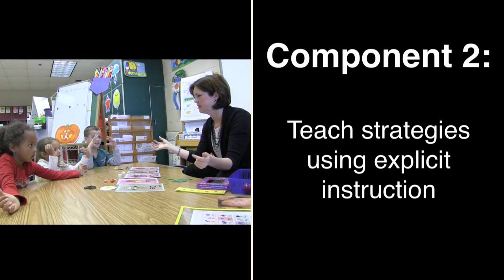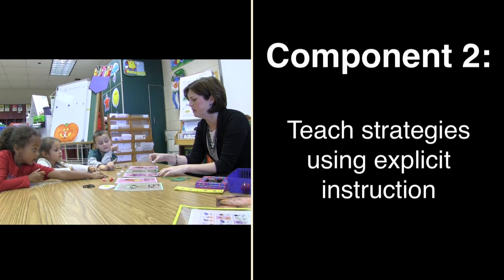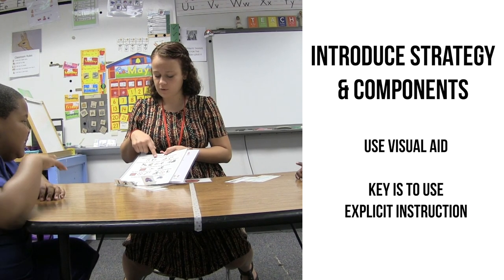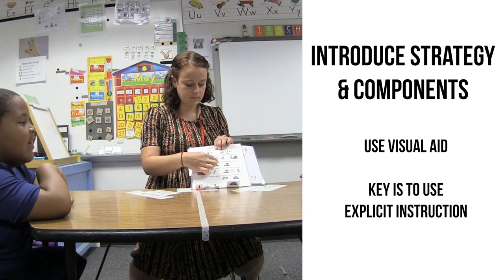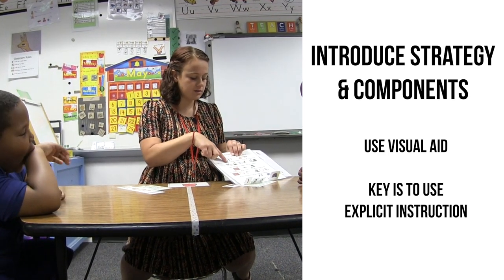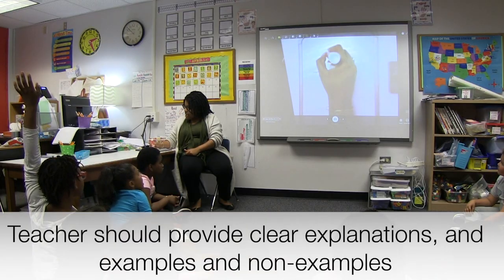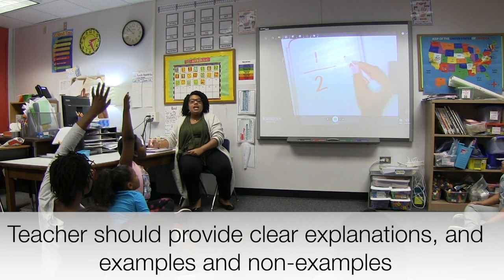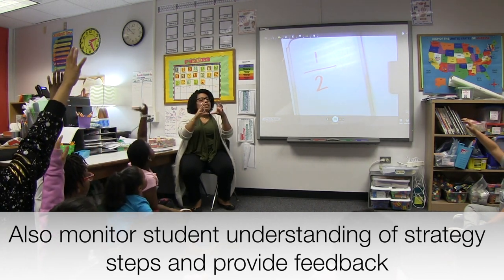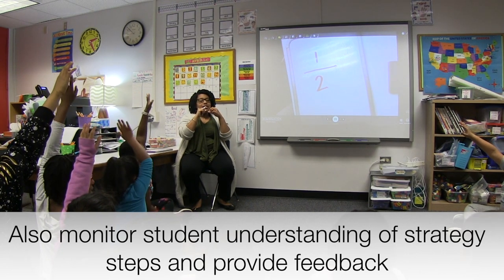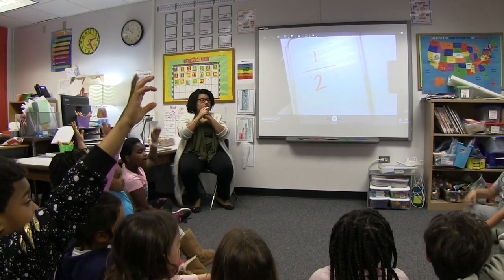The second component of HLP 14 is to use explicit instruction to support student learning of the strategy and readiness to use it independently. We highlight three critical components related to explicitly teaching students how to use strategies. First, teachers should introduce the strategy and explain the specific strategy components. One helpful way is by using a visual aid such as a graphic organizer or anchor chart. The teacher needs to provide clear explanations and examples and non-examples as appropriate. Teachers should also monitor students' understanding through questioning and opportunities to respond during guided practice, and provide specific, immediate feedback on student use of new strategies or skills.